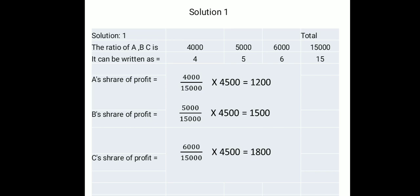B's share: investment is 5000, so 5000 divided by 15000 multiplied by 4500 equals 1500. C's share: investment is 6000, so 6000 divided by 15000 multiplied by 4500 equals 1800. Adding all three: 1200 + 1500 + 1800 = 4500. This is the distribution of profit according to their investments.